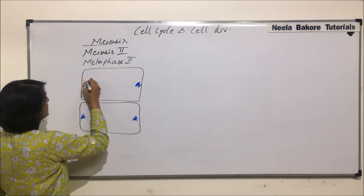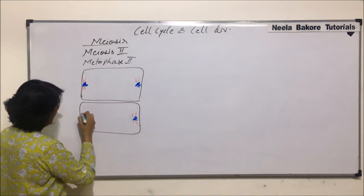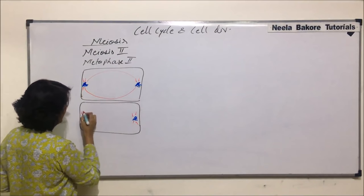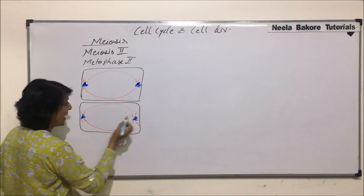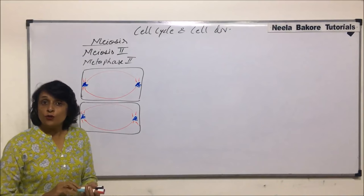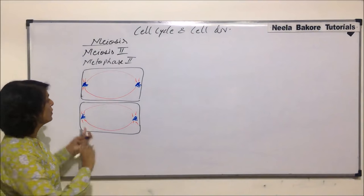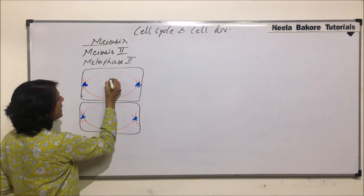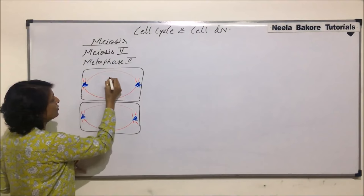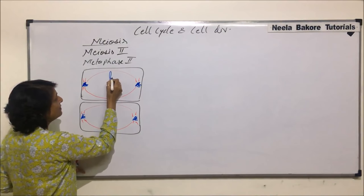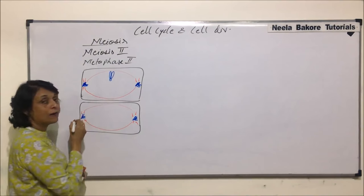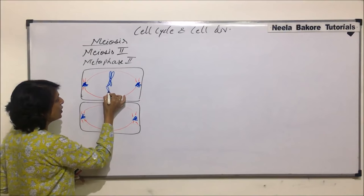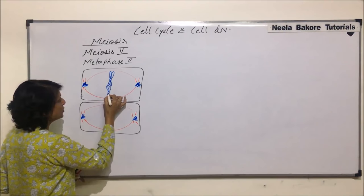These are the asters and the spindle fibers. The spindle fibers are again going to be continuous and discontinuous. Chromosomes have aligned on the equatorial plane. If these are the poles, this vertical line becomes the equatorial plane. Let us make this chromosome. This chromosome has condensed and we are seeing these two arms very distinctly — the two arms — and the other chromosome was here with its two arms.